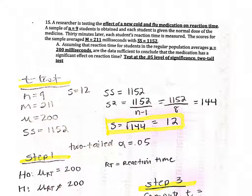Hello, this is Ruby. Today we're going to do a t-test. We have a researcher who's testing the effects of a new cold and flu medication on reaction time. They've chosen a sample of nine students and they're going to give each student a normal dose of the medication, and then 30 minutes later they're going to measure that student's reaction time.